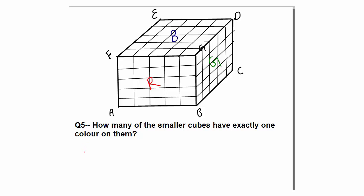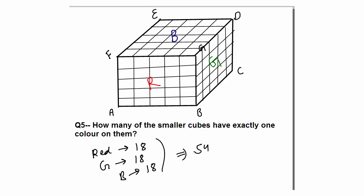Question number 5: How many of the smaller cubes have exactly one color? I have already calculated red — there are 18. The same logic applies to green: 9 + 9 = 18. And same for blue: 9 + 9 = 18. So 18 + 18 + 18 = 54 cubes have exactly one color on them.